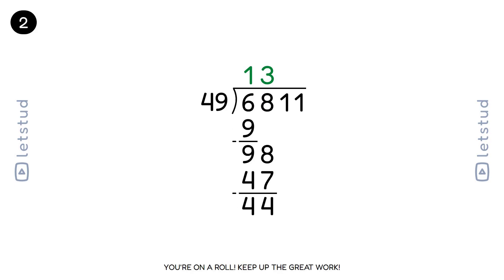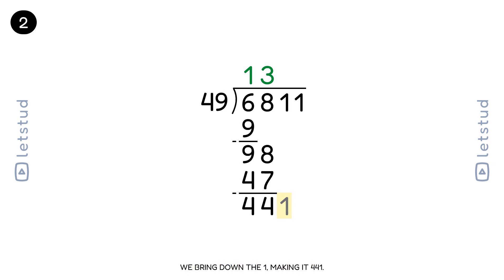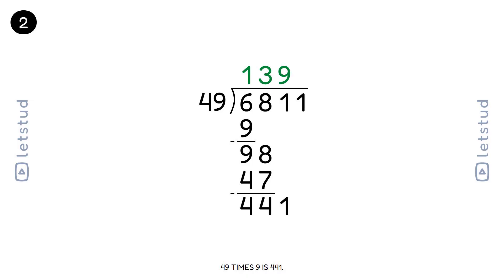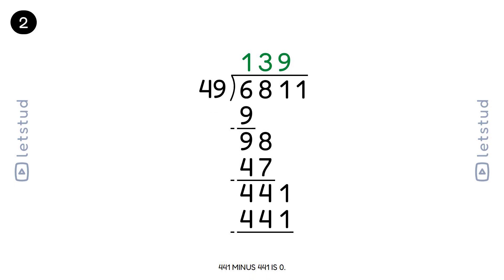You're on a roll, keep up the great work. Let's bring down the last digit, 1, making it 441. 49 fits into 441 nine times. 49 times 9 is 441. 441 minus 441 is 0.